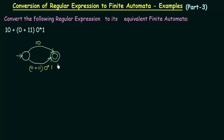We cannot just leave it like this because this is not a proper finite automata — we have to further expand it. Let us expand this part. I will take this initial state that we created, and here we see that this is '10'. There is no plus symbol between them; it is '1' followed by '0'.